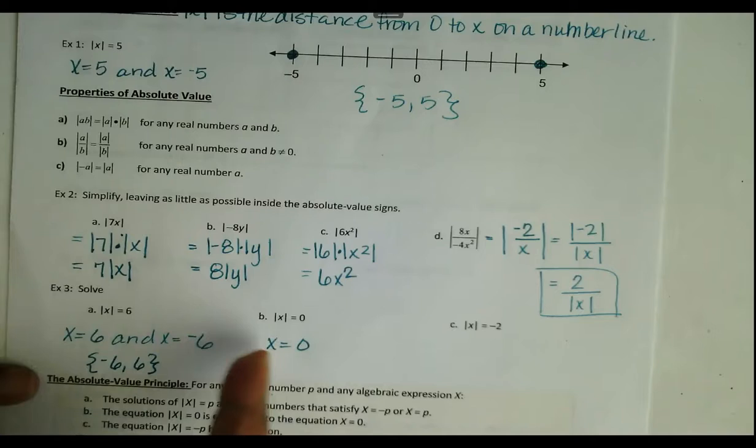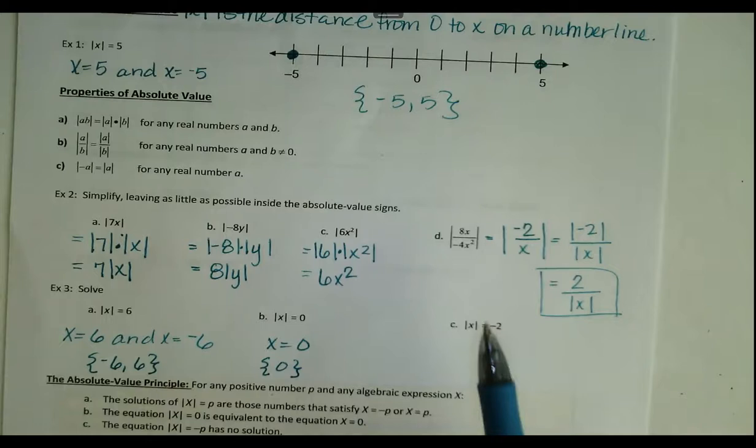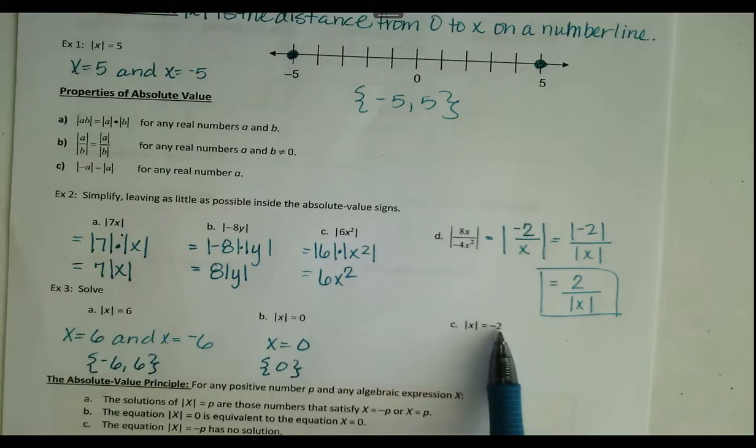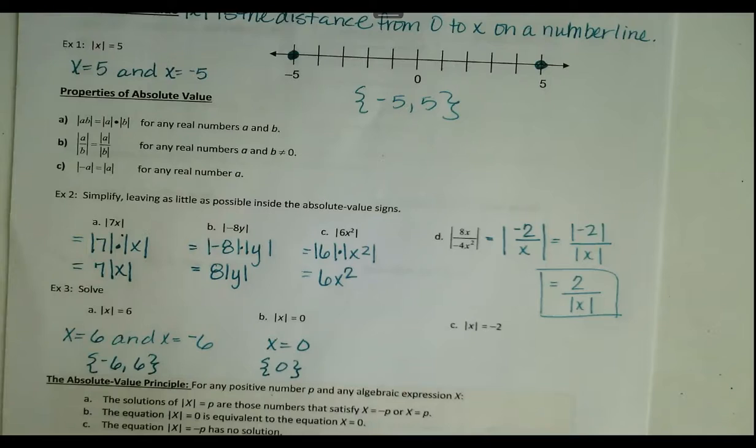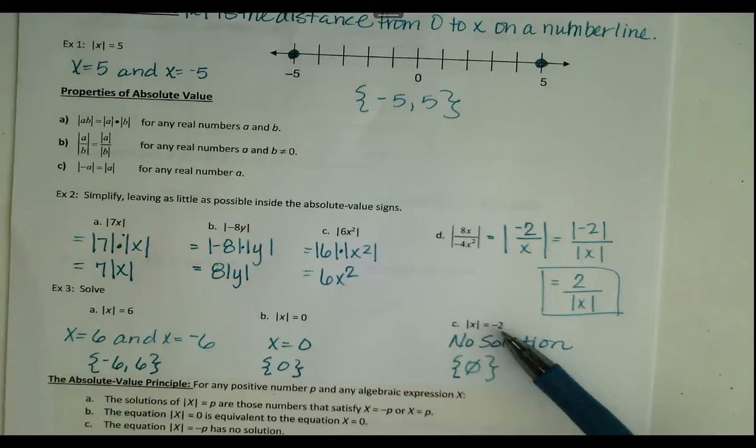For the last example, we want a number that's negative 2 units from 0. Can distance ever be negative? No. So when you get a problem where the absolute value is set equal to a negative number, there is no solution. You write 'no solution' and put the empty set inside the curly braces.